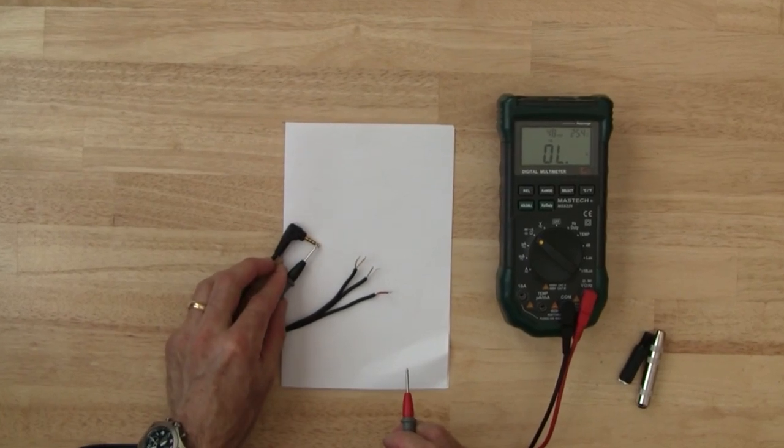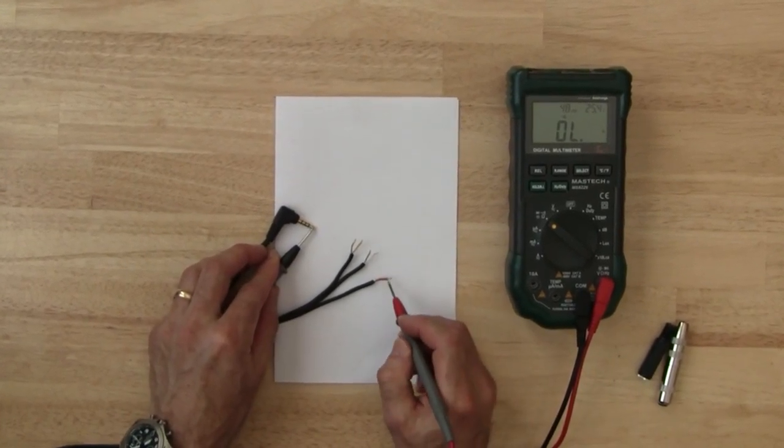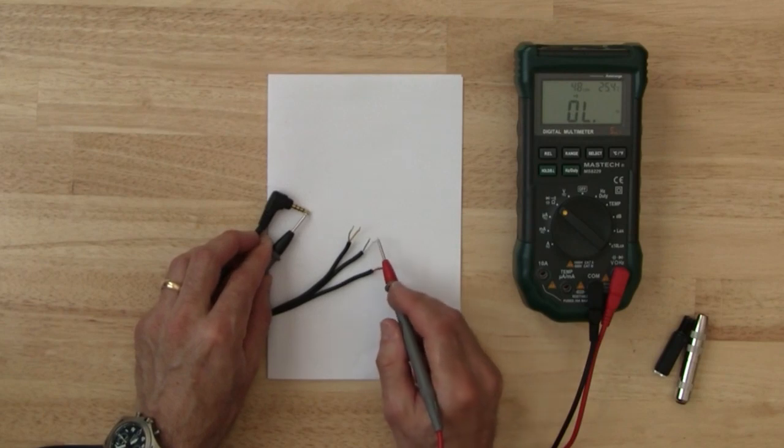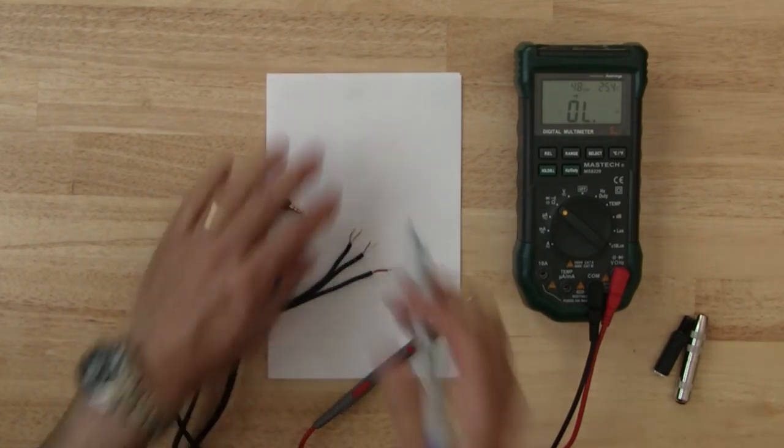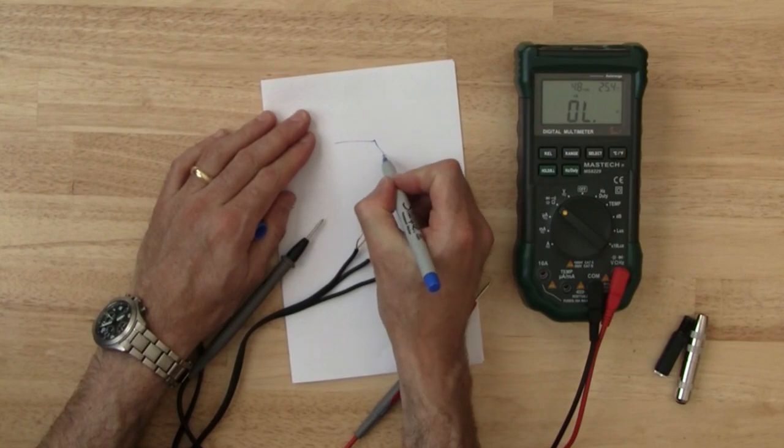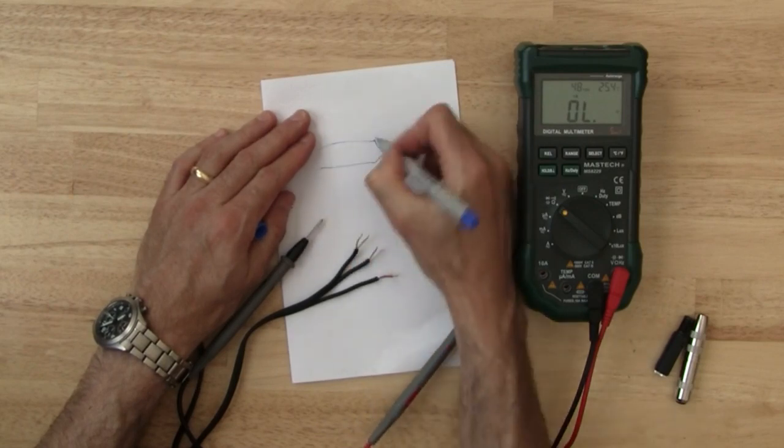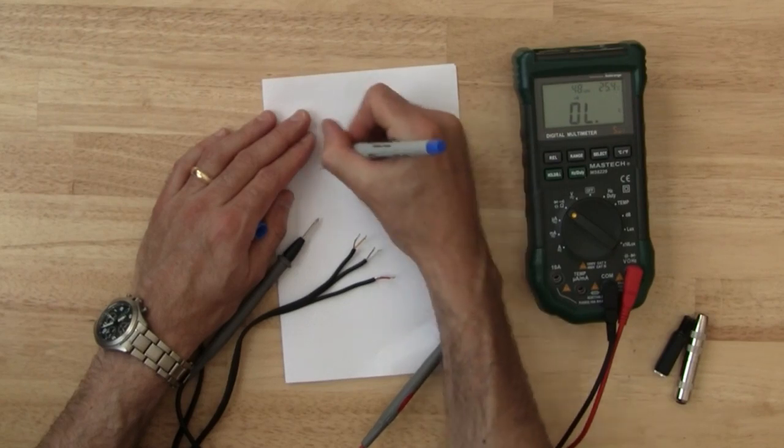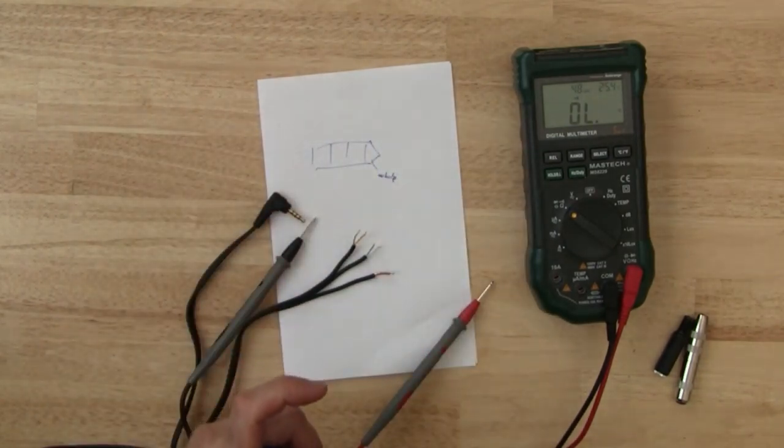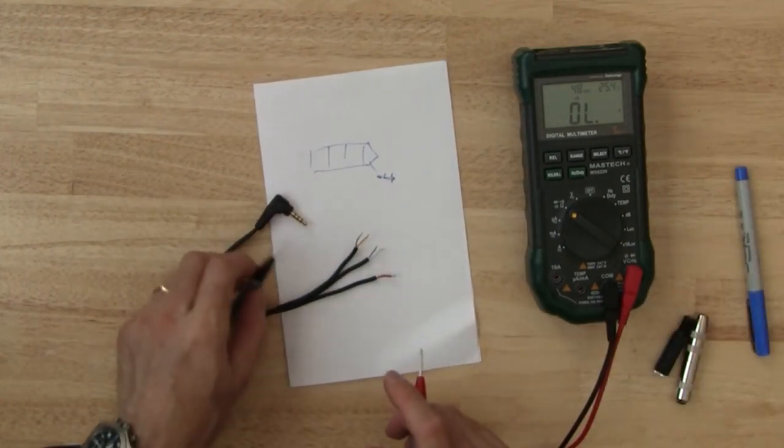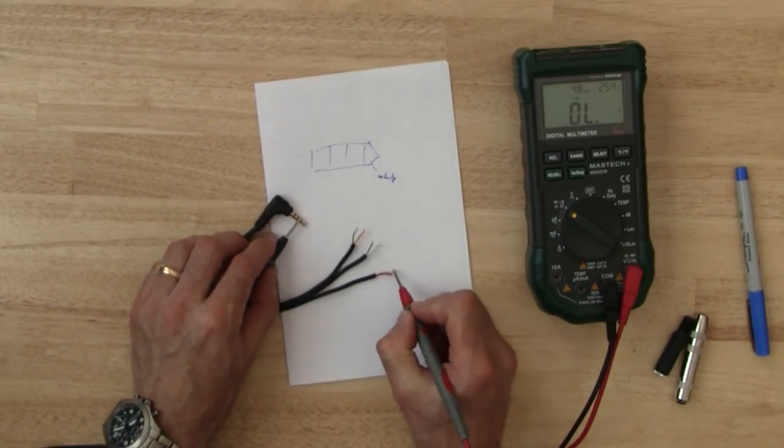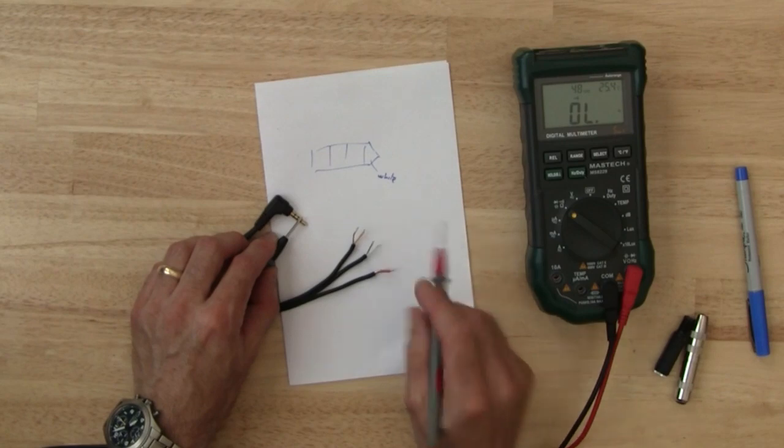So let's start with the tip. So it looks like it's white. I'm going to draw a little legend here. That was the tip - white. Okay so next up is the first ring. That's yellow.